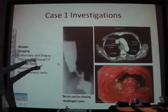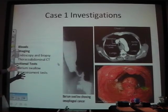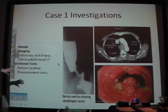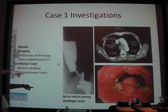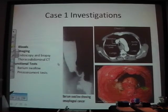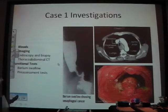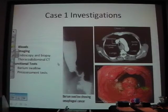On barium swallow you can clearly see the stricture — almost like an apple core appearance. And there's a sort of polypoid mucoid horrible-looking tumour seen on OGD. Another tip for your exam: don't abbreviate — say the full name, 'oesophagogastroduodenoscopy' rather than OGD. It shows knowledge and buys you a bit more time.